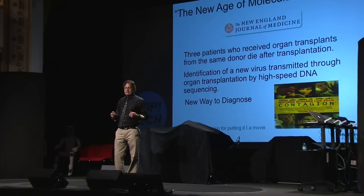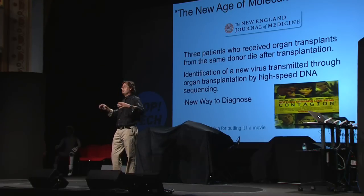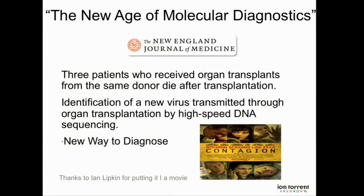Ian Lipkin put us in a movie, which is always cool if you have a piece of equipment. But what's really important is it entered a new way to do diagnostics. We didn't know what was killing these patients — Ian had patients who had gotten organs and just dropped dead. There was no bacteria to sequence, no virus to sequence. All they knew was they had three dead people. So Ian sent those tissue samples to scientists at 454. We decoded those genomes and were able to tell him there was a new virus killing those patients. Now you can screen for that before doing an organ transplant.